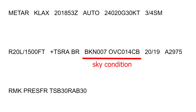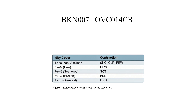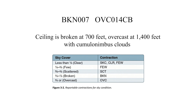The next part is sky condition. It is reported in the sequence of amount, height, and type of cloud cover in terms of vertical visibility. The heights of cloud bases are shown as a 3-digit number in hundreds of feet above ground level. You could also see types of clouds reported, such as TCU denoting towering cumulus or CB denoting cumulonimbus. Sky coverage is always reported in eighths of the sky from horizon to horizon. In our case, the ceiling is broken at 700 feet, overcast at 1,400 feet with cumulonimbus clouds.